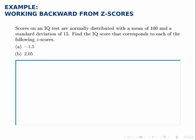Scores on an IQ test are normally distributed with a mean of 100 and a standard deviation of 15. We're asked to find the IQ score that corresponds to each of the following z-scores. So here we're given z-values and we're asked to work backward from them to the data values.